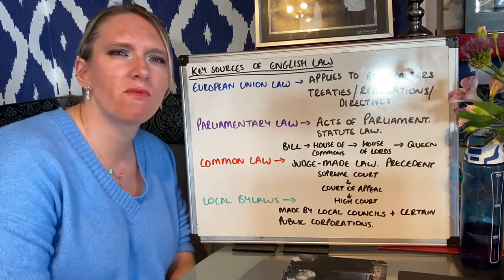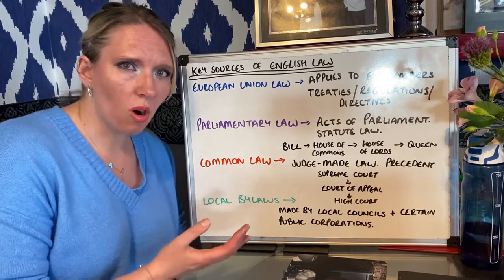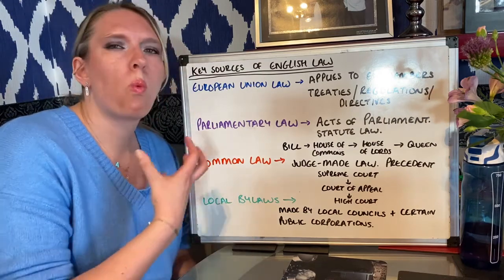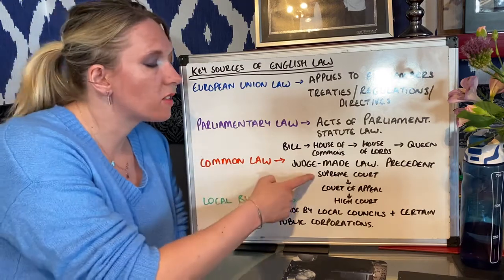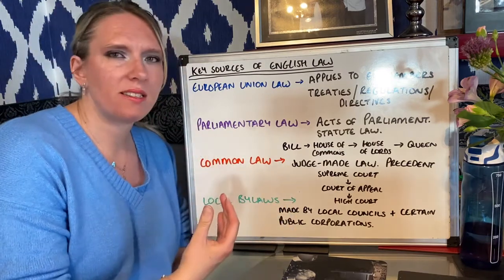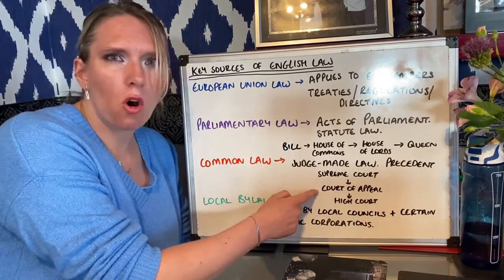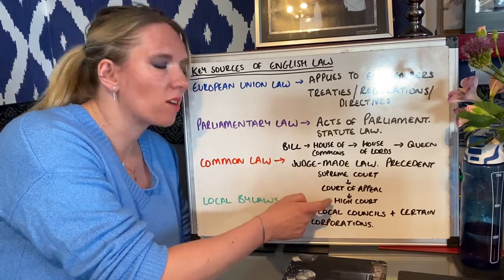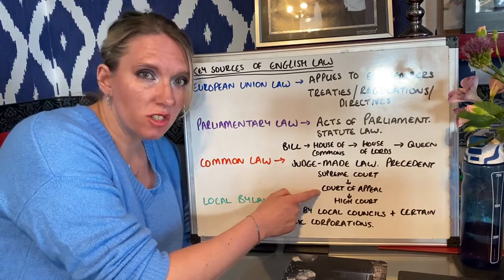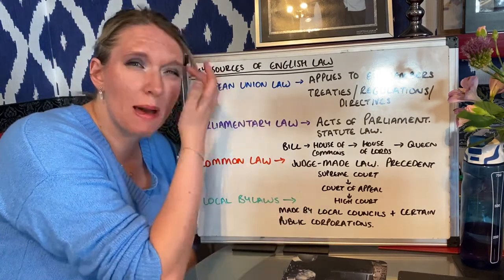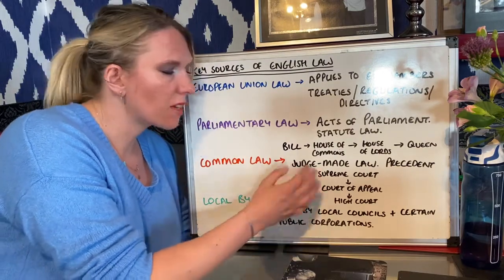There is a very complex set of rules involved in this, but the concept at the core is very simple: the higher the court, the more weight their judgment carries. The highest court in England and Wales is the Supreme Court. When they make a decision, everyone below has to follow it — the Court of Appeal must follow it, the High Court must follow it. If the Court of Appeal makes a decision, clearly the High Court has to follow it because they're below. However, the Supreme Court doesn't have to follow the Court of Appeal because they're above.